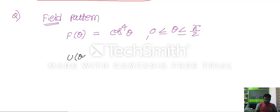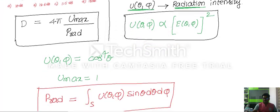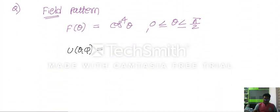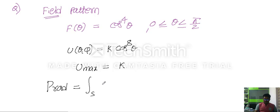Since it's a field pattern, to get the radiation intensity we square the electric field intensity. So U(θ, φ) = K · cos⁸θ, where K is a proportionality constant. The maximum value U_max = K. The radiated power is then P_rad = ∬ K · cos⁸θ · sinθ dθ dφ.